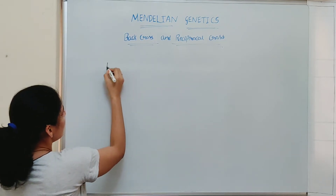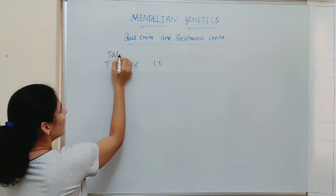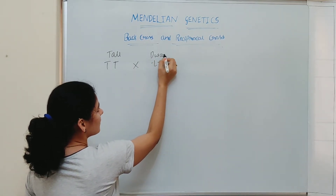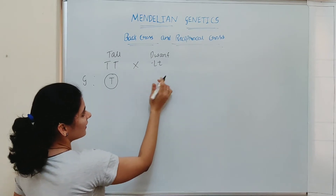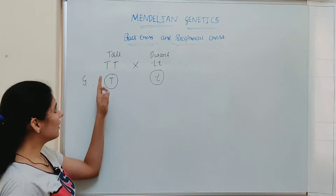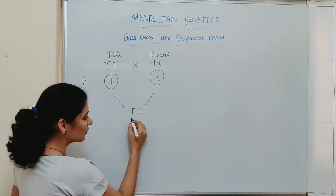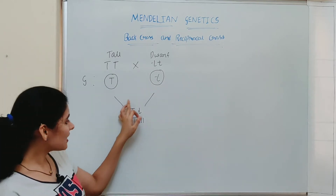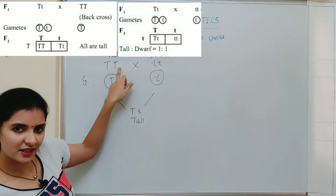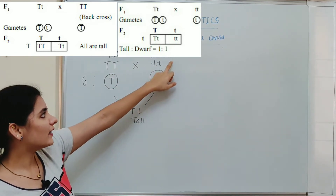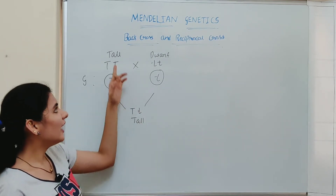For example, consider stem height in which Mendel crossed a tall plant (TT) with a dwarf plant (tt). All gametes from the tall plant carry T, and all gametes from the dwarf plant carry t, giving an F1 hybrid with genotype Tt, which is phenotypically tall. In a back cross, this F1 hybrid is crossed back with either the tall parent (TT) or the dwarf parent (tt).